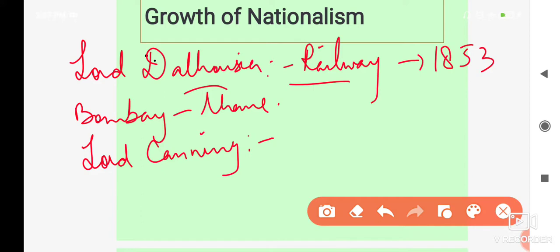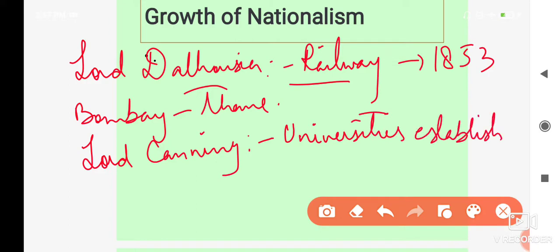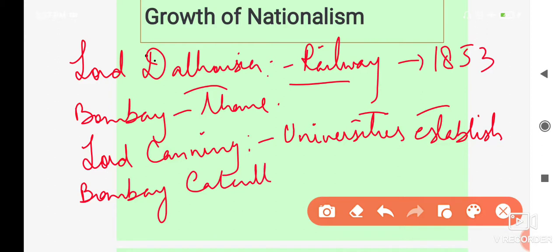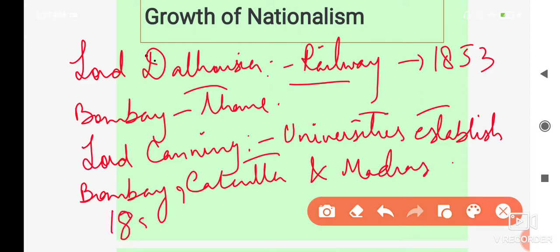which was also called as the Government Act of Good Governance. Iske baad, Lord Canning ke time hi, Universities establish hui thi — Bombay, Calcutta, and Madras mein — kab? 1857 mein. Apart from this, Lord Canning ke time hi, Indian Council Act pass hui thi, kab? 1857 mein.